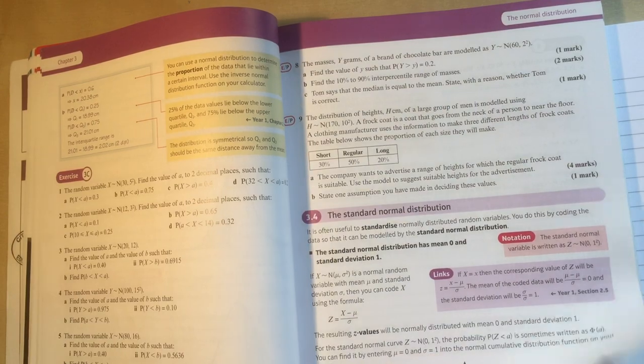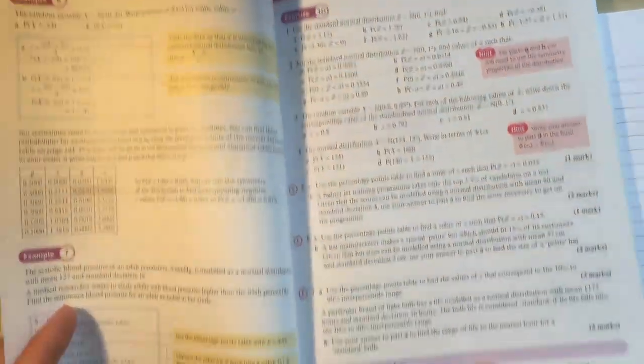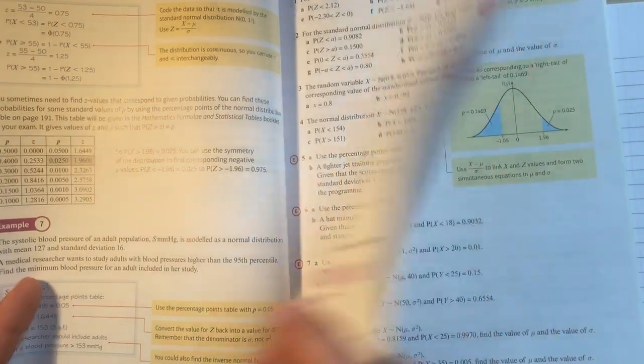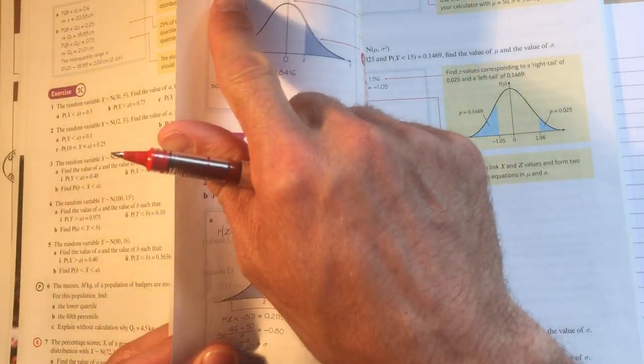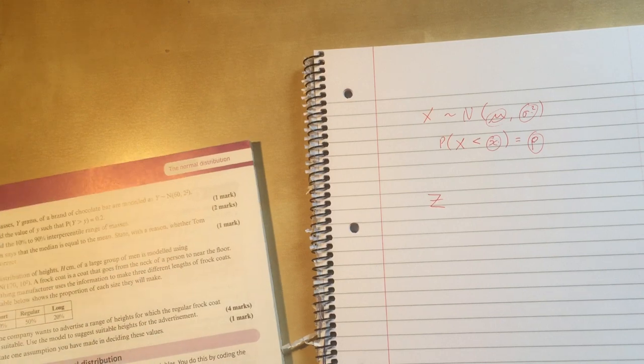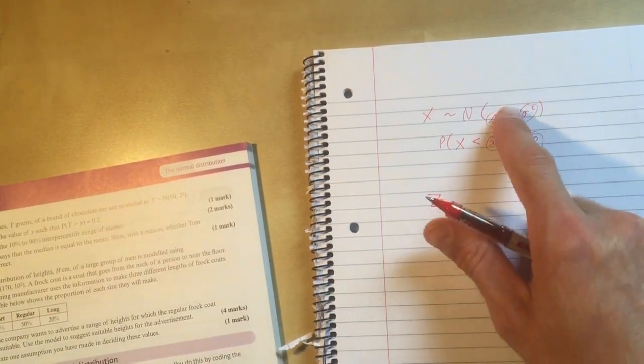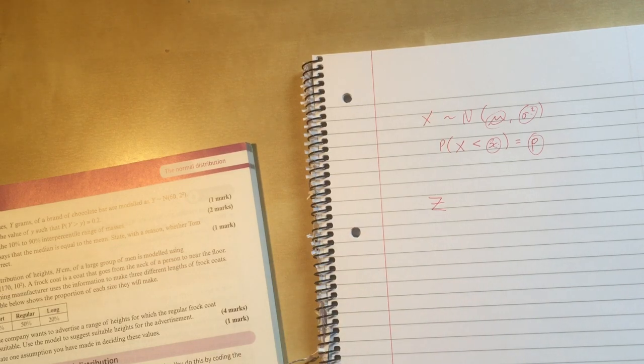So if you flick it forward in the chapter, you'll see that that's what's happening. Section 3.4 is the standard normal distribution, and then section 3.5, finding mu and sigma, and all the questions have z's in there. That's what we're learning to do here. It won't be incredibly clear as to how we do that. Just take my word for it for the moment that that's what we need to do.